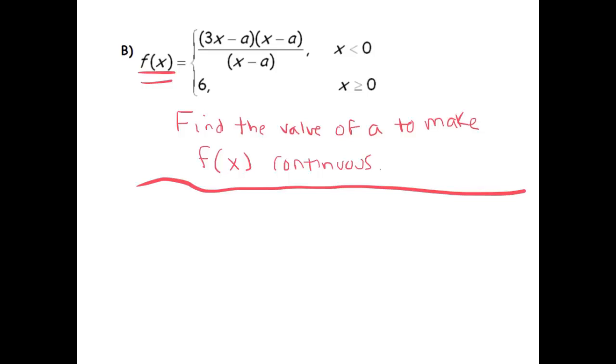One thing that is easy to do is to note that we have a hole here at x equals a. So really this top function can be rewritten as f(x) is equal to 3x minus a for x less than 0, and it's equal to 6 when x is bigger than or equal to 0.